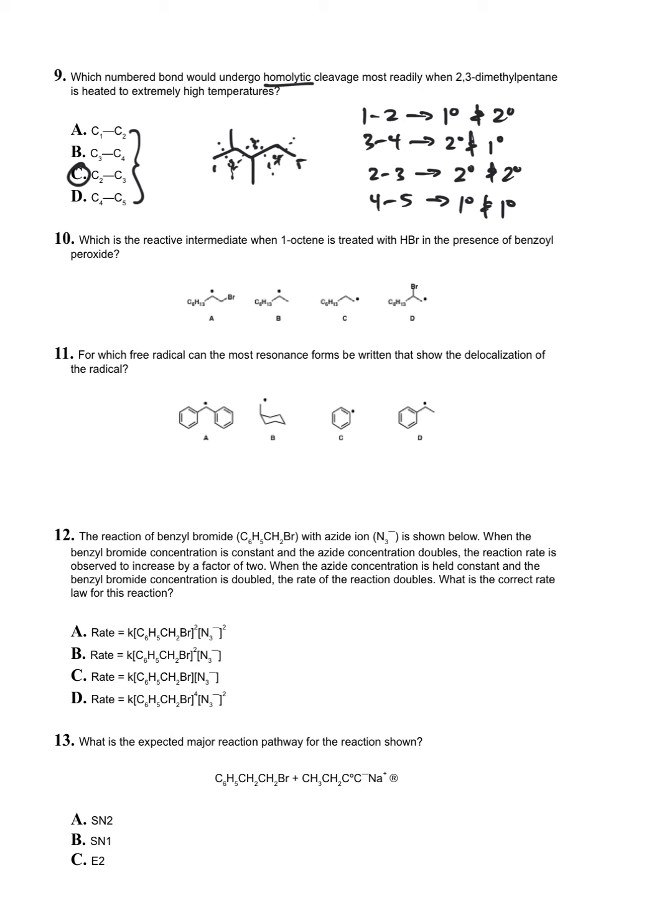Question ten: which is the reactive intermediate when 1-octene is treated with hydrogen bromide in the presence of benzoyl peroxide? That's the key here, peroxide. We're generating a bromine radical to begin with. That bromine radical is then adding first to the alkene, which gives the most substituted radical. So we're looking for something with a primary bromine with a secondary radical. This is going to be A.